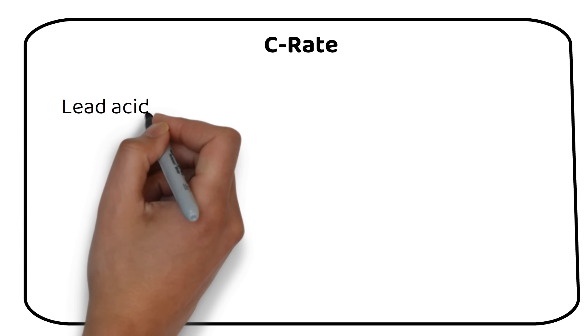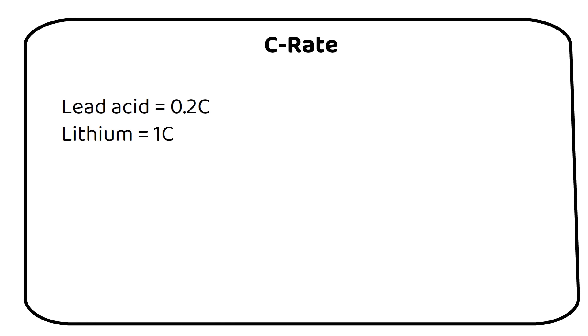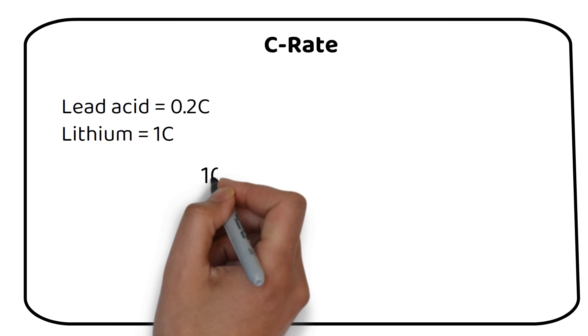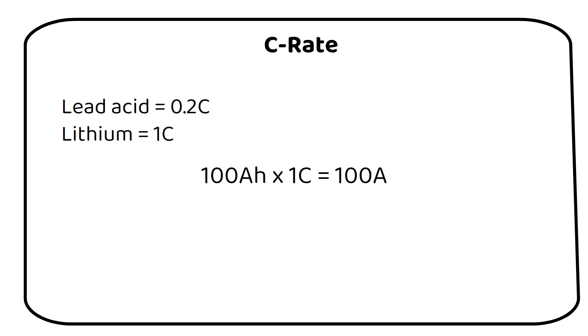Now the second part of the calculation is a term called C-rate. Every battery has a recommended C-rate. This is 0.2C for lead acid and 1C for lithium. This is a recommended charge and discharge current of a battery. For example, a 100 amp hour lithium battery should be charged and discharged at a maximum of 100 amps, because 100 amp hours times 1C equals 100 amps.